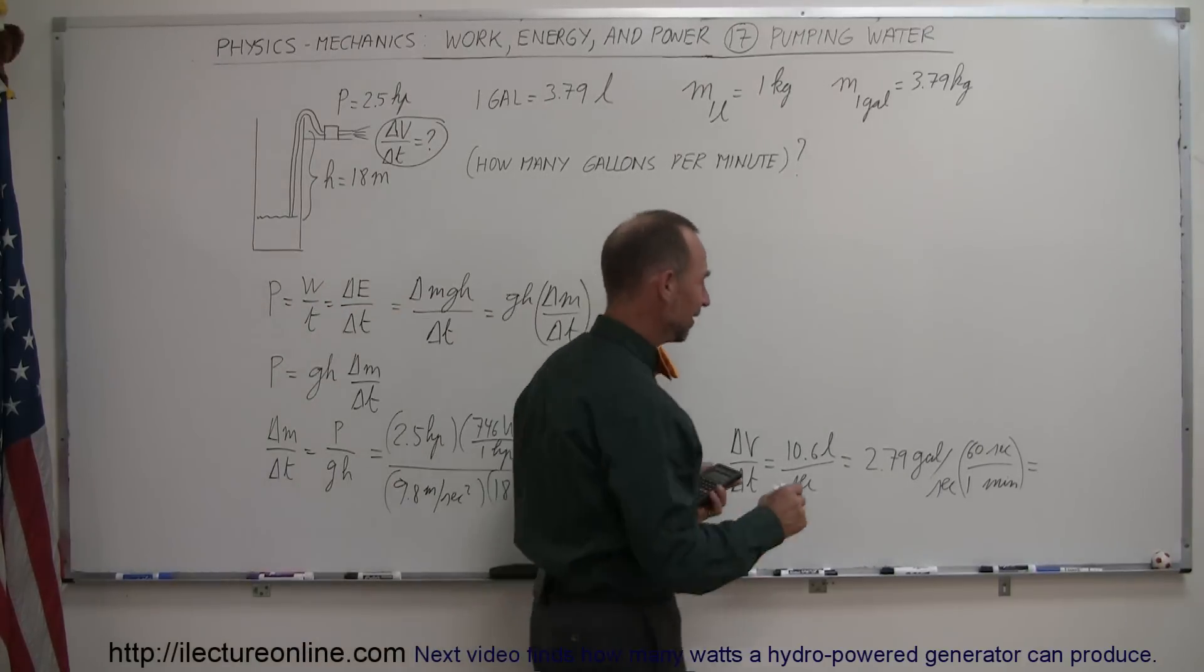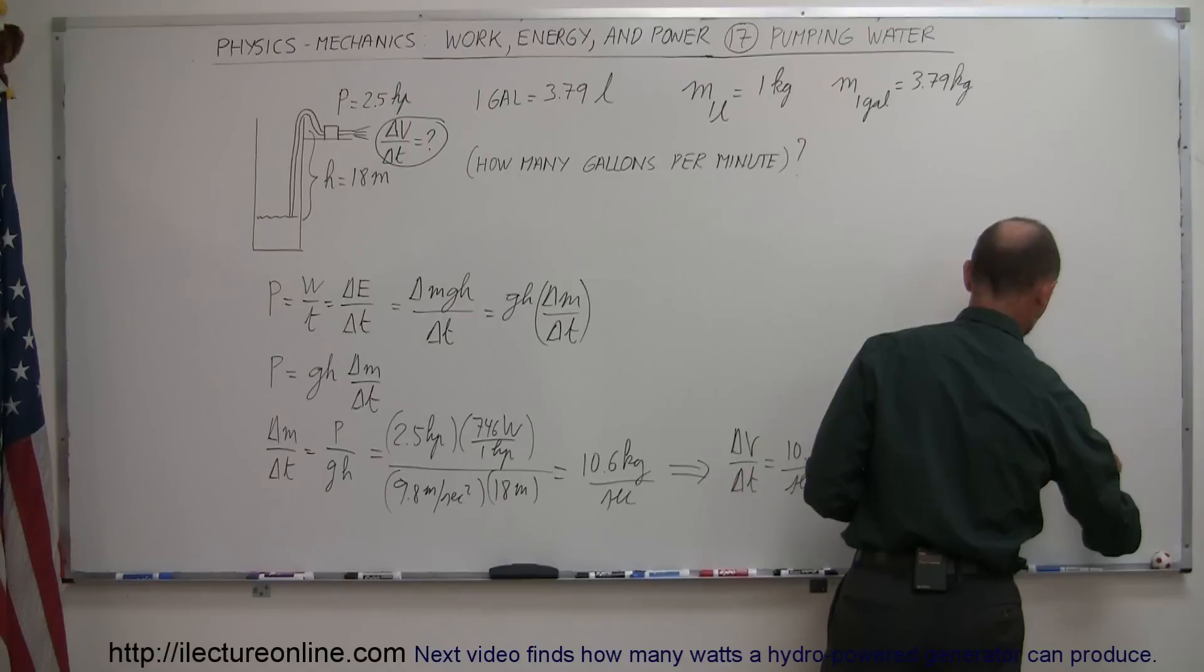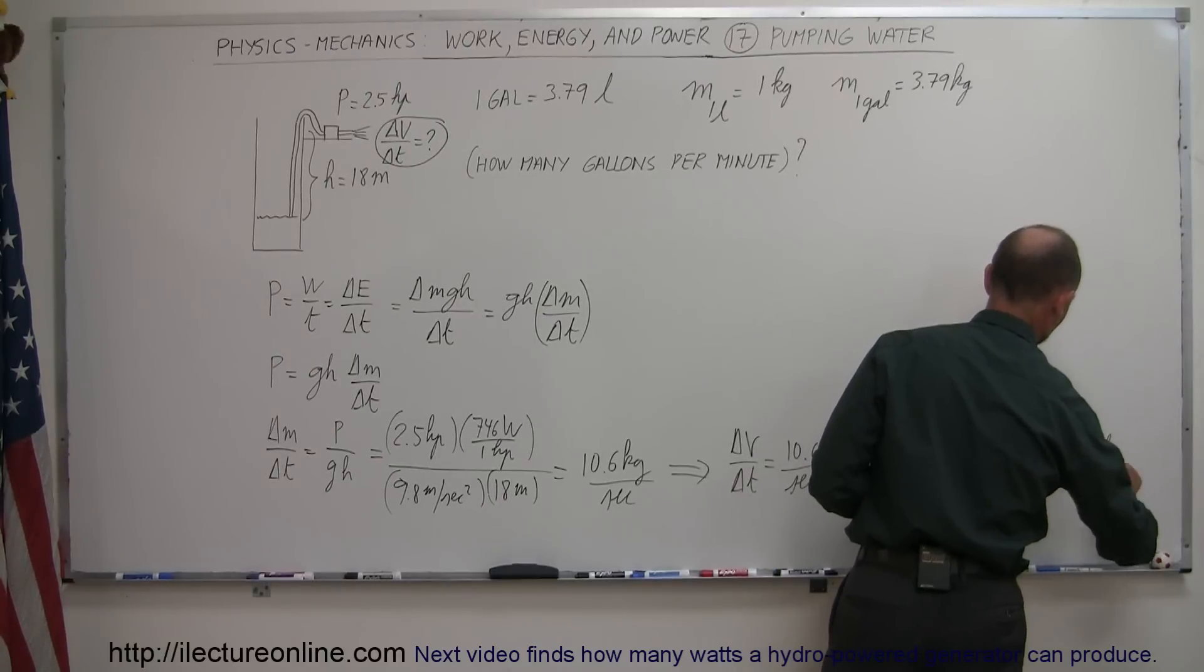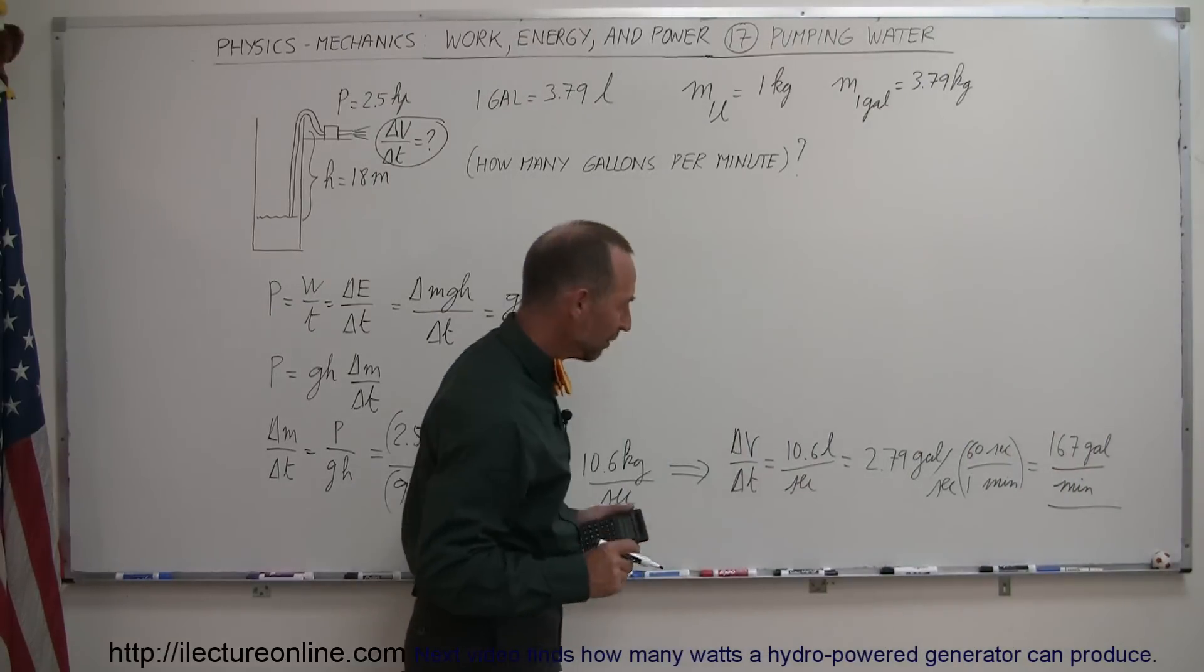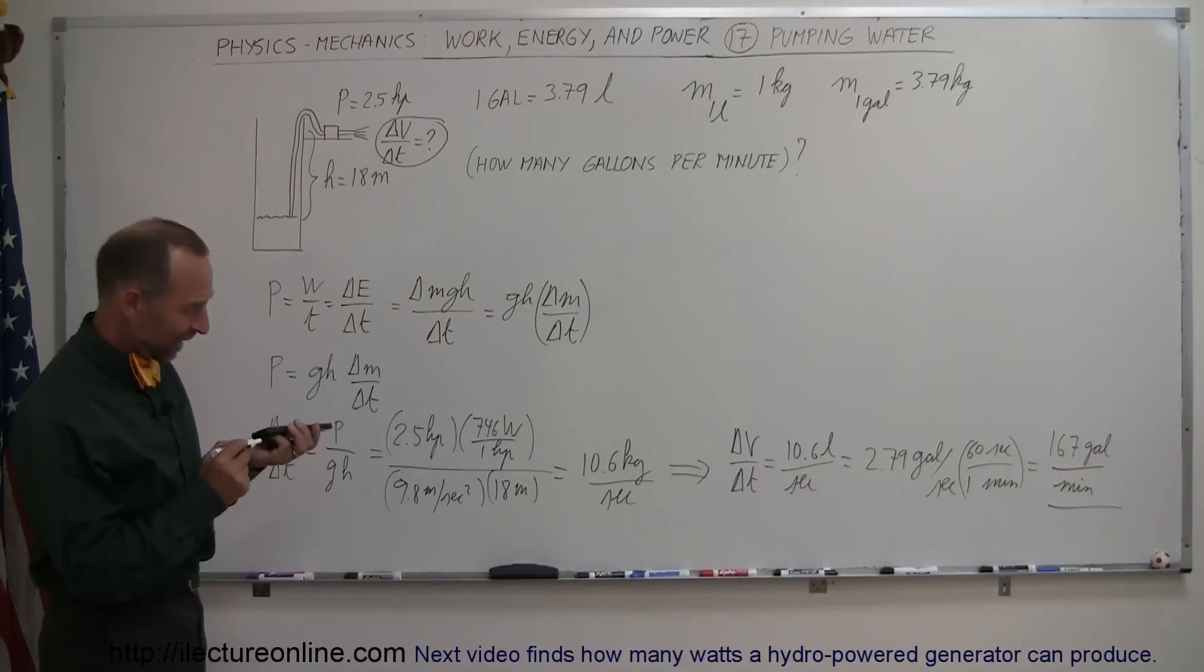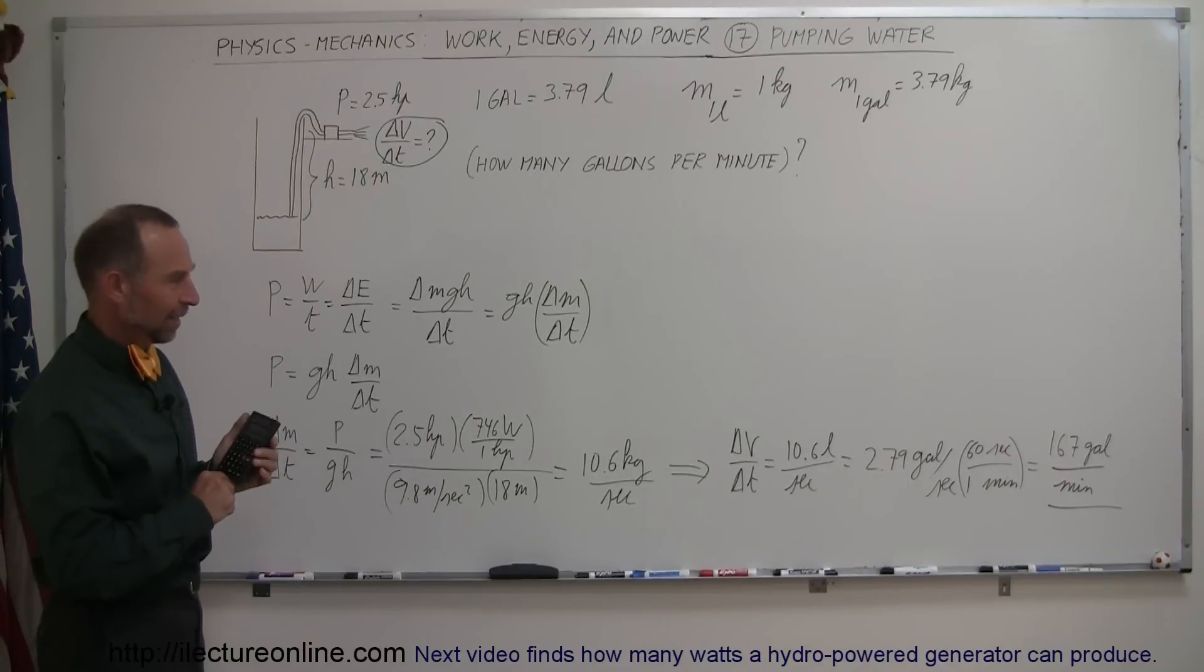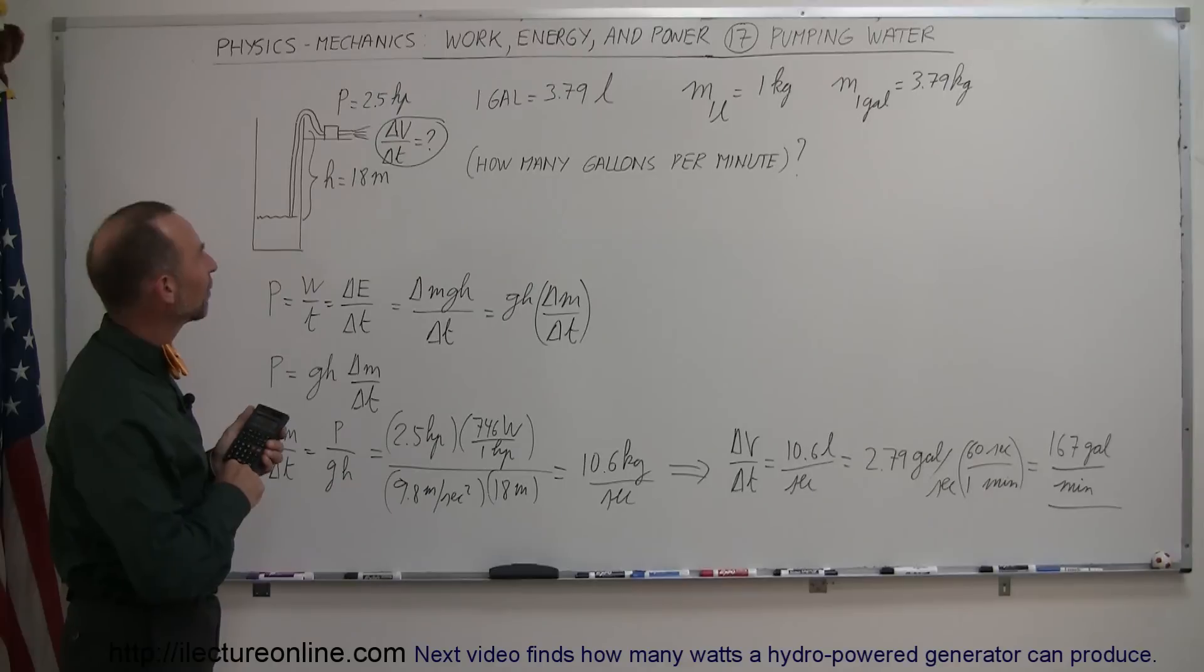It's 167 gallons, 167 gallons per minute. And now that seems a whole lot better. Yeah, that was a little suspicious. 2.79 gallons per minute would not, of course, not be very good.